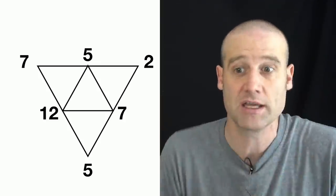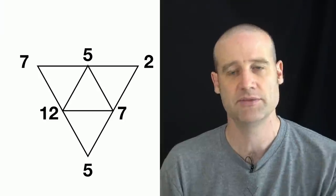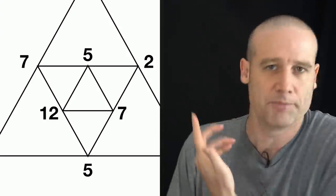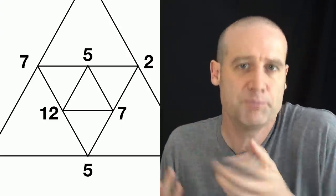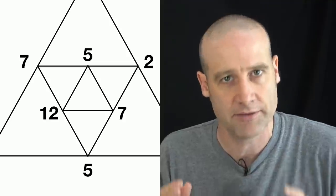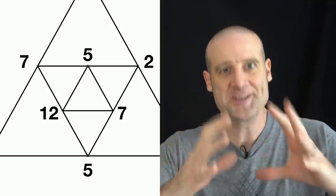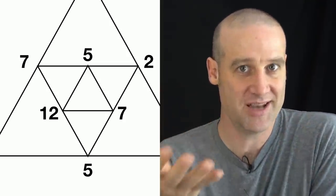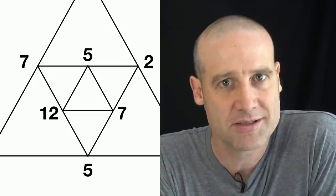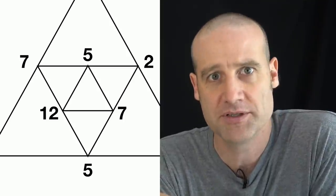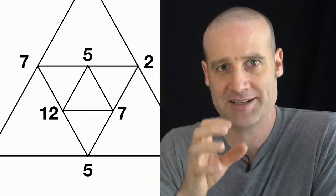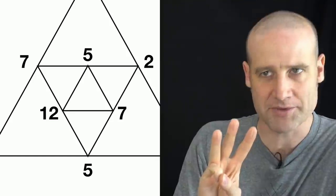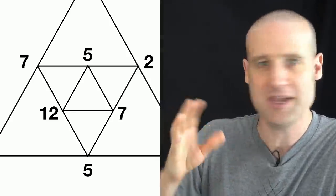So now we've gone from one set of numbers — 5, 7, 12 — to a new set of numbers — 7, 5, 2. We could then repeat that. The next one doesn't quite fit on screen, but you get the idea. In theory you could keep going on and on.